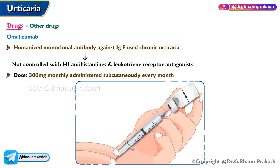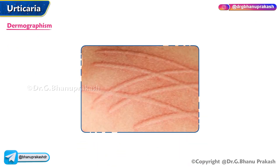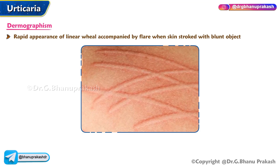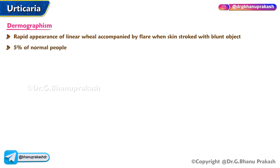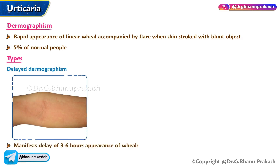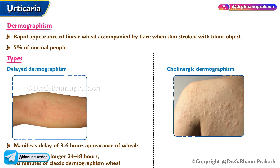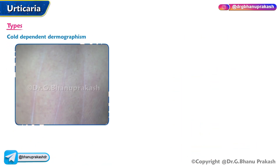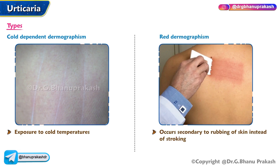Dermatographism presents with rapid appearance of a linear wheal accompanied by a flare when the skin is stroked with a blunt object; observed in 5% of normal people. Types: delayed dermatographism manifests with a delay of three to six hours in appearance of wheals, which persist 24 to 48 hours compared to 30 minutes of classic dermatographism. Cholinergic dermatographism resembles multiple small urticarial papules associated with cholinergic urticaria. Cold-dependent dermatographism is triggered by cold temperatures. Red dermatographism occurs secondary to rubbing rather than stroking of the skin.